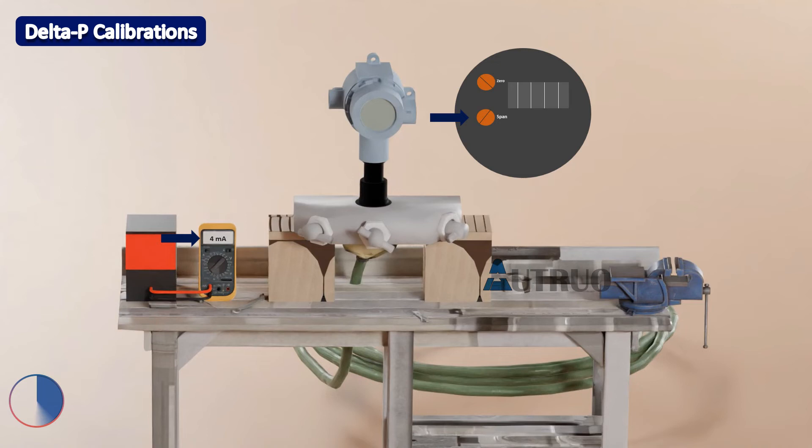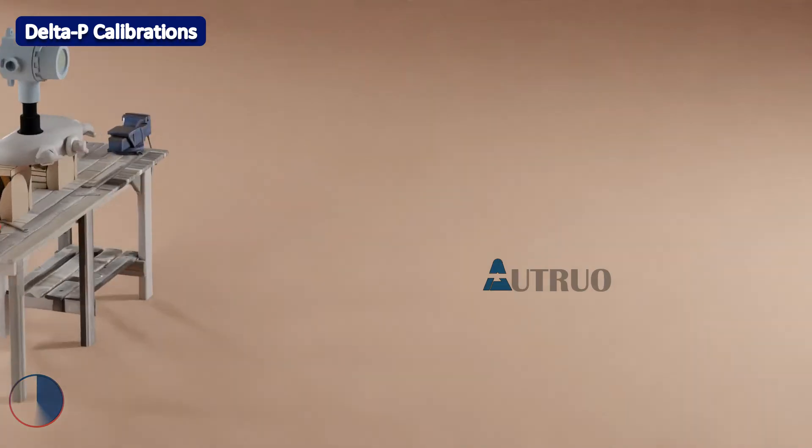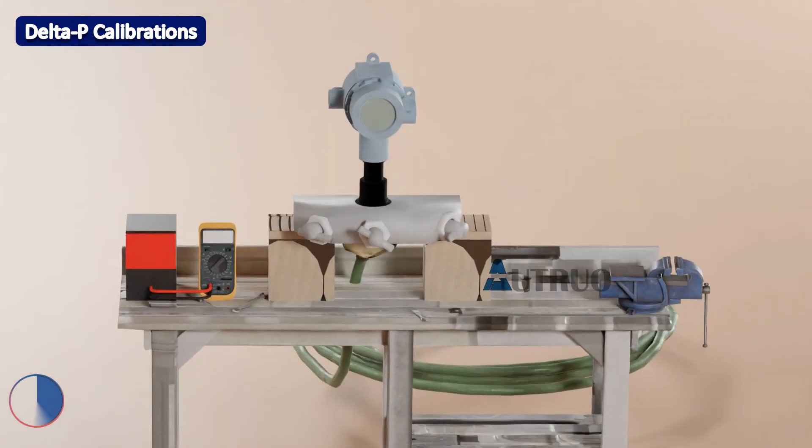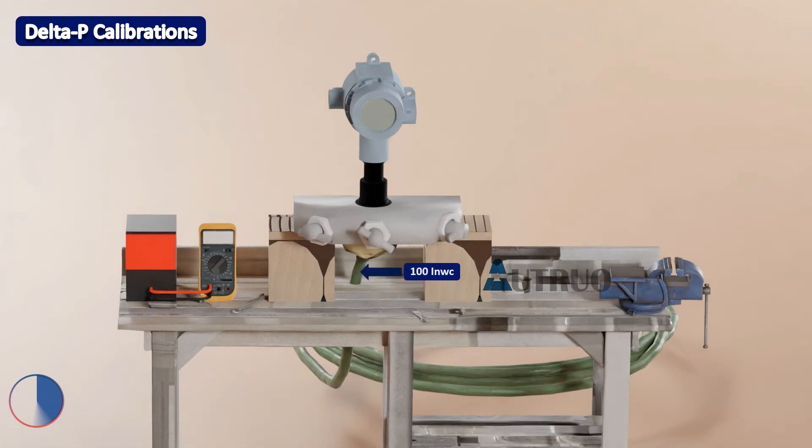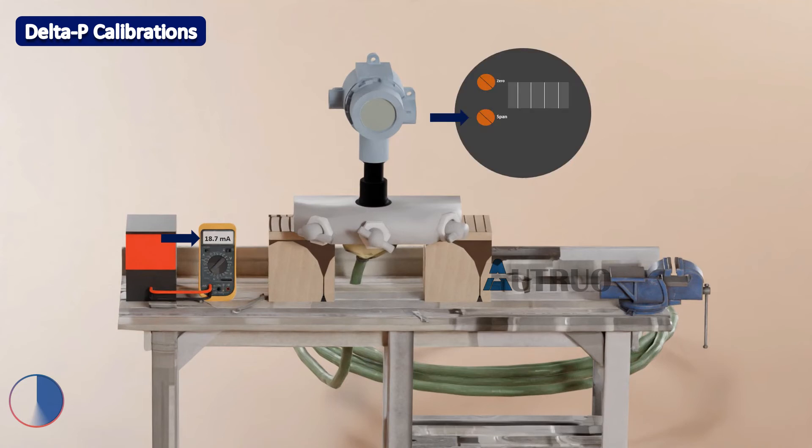Now let's calibrate the upper operating limit of the transmitter. The equalizing valve will be varied in such a way that the pressure supplied will only be supplied to the high side of the transmitter. We will now need to apply the pressure that is equal to 100 inch of water column to the transmitter. Now the current coming from the transmitter is 18.6 milliampere. We will now vary the span until the transmitter levels up at 20 milliampere.